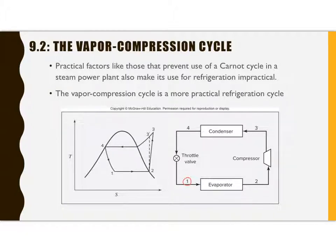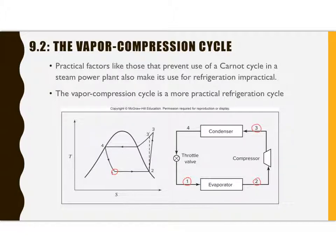We're going to start with an evaporator. We have a liquid or liquid-vapor mixture at a low temperature and low pressure, and we're going to evaporate it to turn it into a vapor. We don't usually call it boiling, but it's the same process — we start with a liquid and end with a vapor. This vapor then needs to be compressed to a high pressure, so we have work input at the compressor. It comes out at a higher pressure, and ideally this compression is isentropic, shown as state 3 prime, though in reality there will be some increase in entropy.